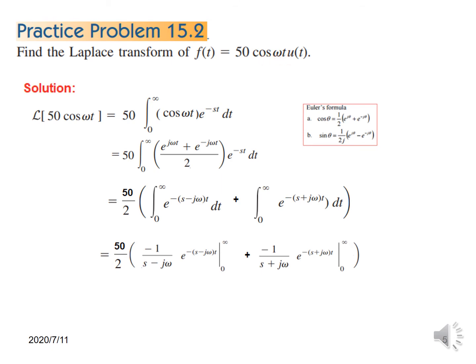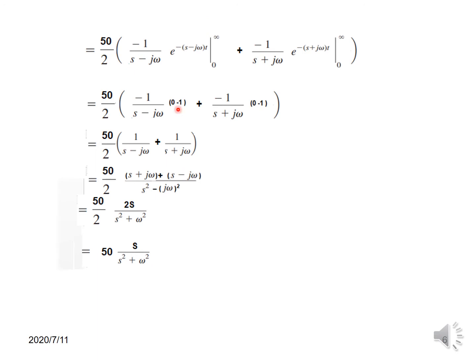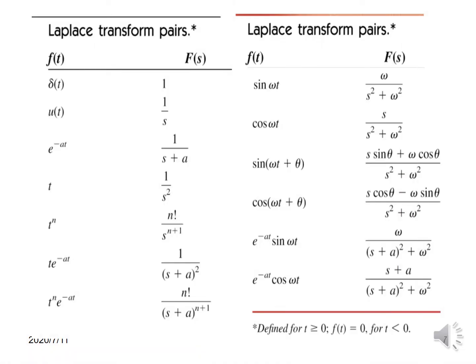Now for the practice problem, we have the cosine function instead of sine. We follow the same pattern — writing in terms of exponential form, separating terms, taking commons, integrating, and putting the limits — exactly the same way as the previous derivation. This gives the final answer for the Laplace of cosine omega t. These are the derivations covered: some in the first video, and sine and cosine derived in this video.